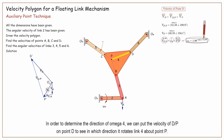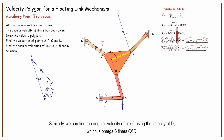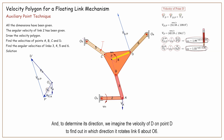We call the intersection as D prime. Now we can find the velocity of D with respect to P and measure its magnitude, together with the velocity of D. From the velocity of D with respect to P, which is omega 4 times PD, we can find the angular velocity of link 4. In order to determine the direction of omega 4, we can put the velocity of D with respect to P on point D to see in which direction it rotates link 4 about point P. Similarly, we can find the angular velocity of link 6 using the velocity of D, which is omega 6 times O6D. And to determine its direction, we find the velocity on point D to determine in which direction it rotates link 6 about O6.